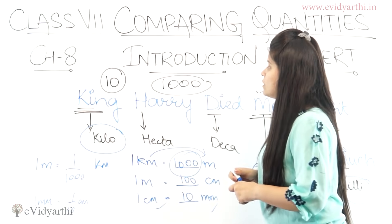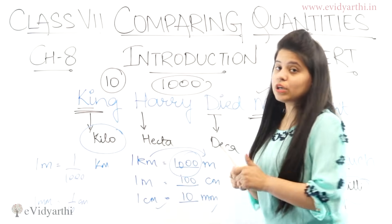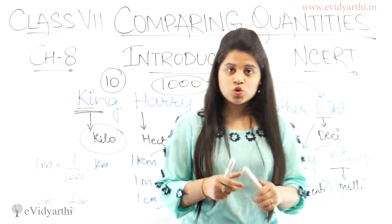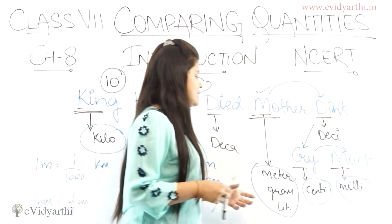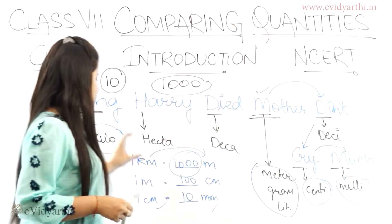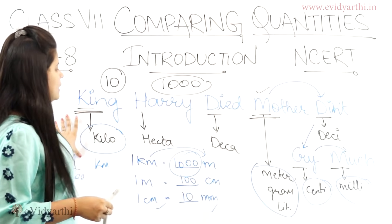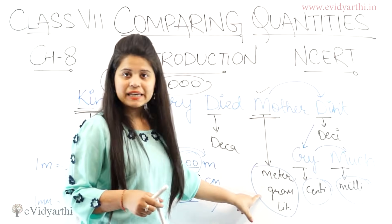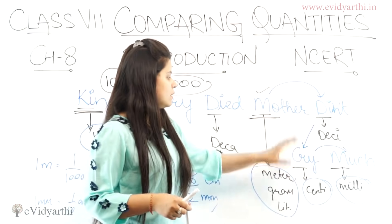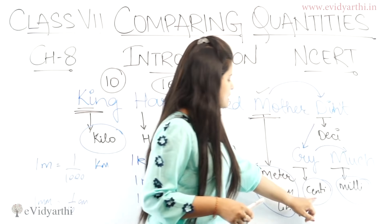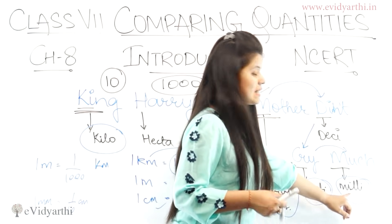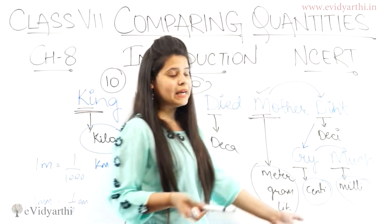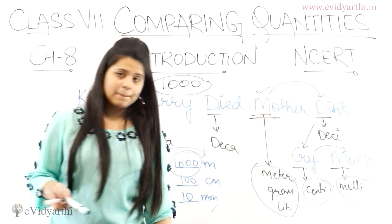So this was about these quantities that are very commonly used — the ones we discussed: kilo, then meter, gram, liter, then centimeter or centiliter, and then milli. These are the most frequently used unit conversions.